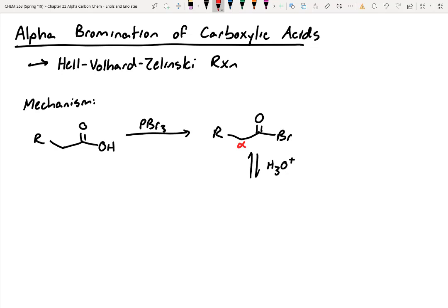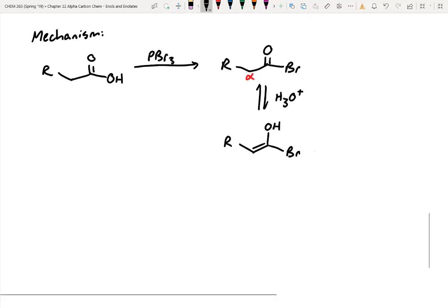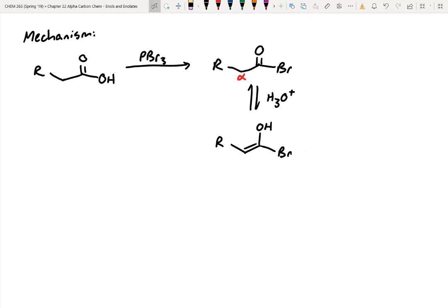In the next step, you can treat this with catalytic acid, and we do have alpha protons right here, right? So we can actually tautomerize this all the way to the enol. The nice thing with this is it leaves that bromine attached, so the bromine won't fall off at this step.